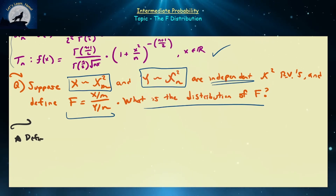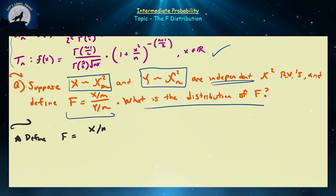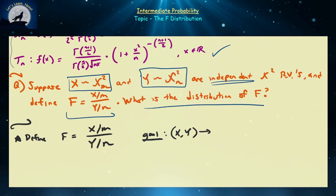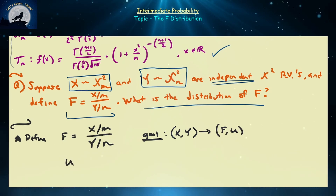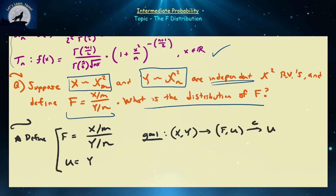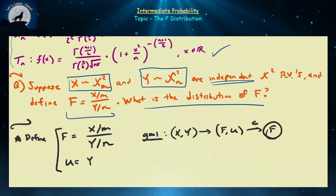We begin by defining our variables. We define F to be equal to X divided by M, all over Y divided by N. For our change of variables, we start with variables X and Y and map to a new two-dimensional world of F and U. We choose U to be equal to Y — the bottom chi-squared random variable — and then we condition off U to be left with only the F random variable.